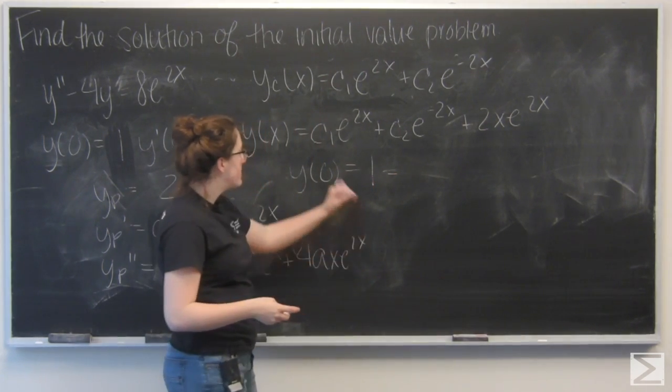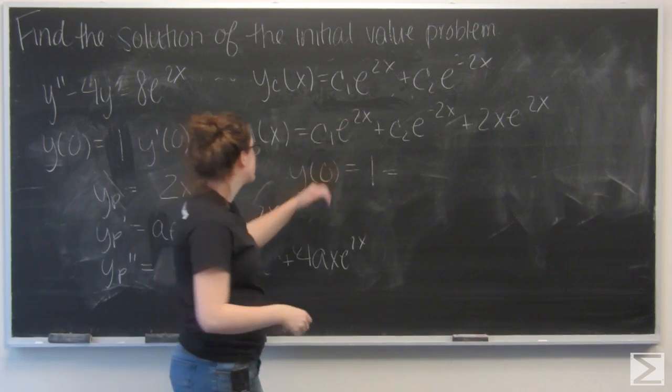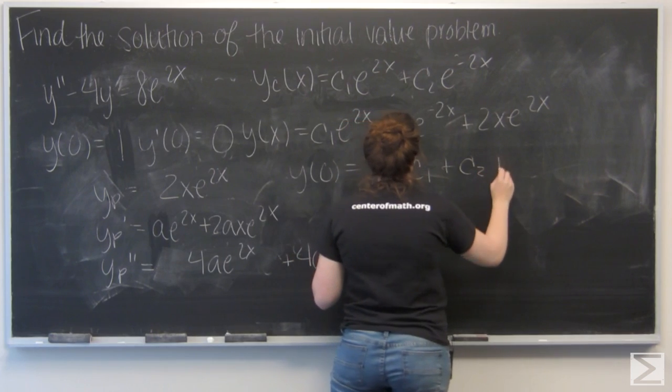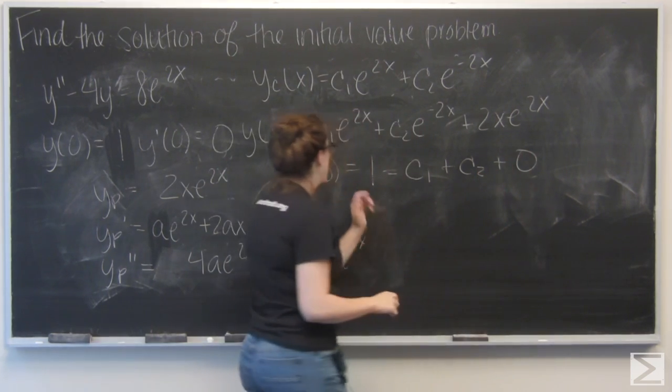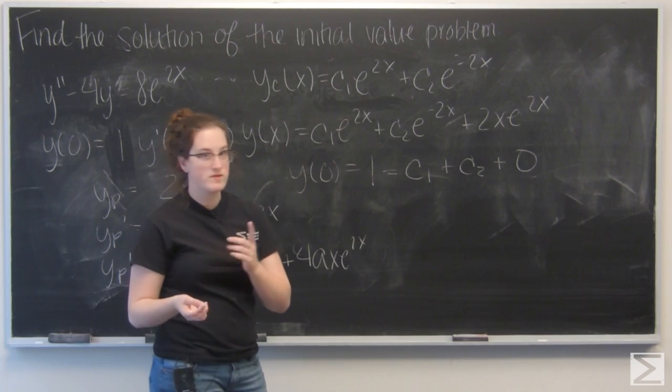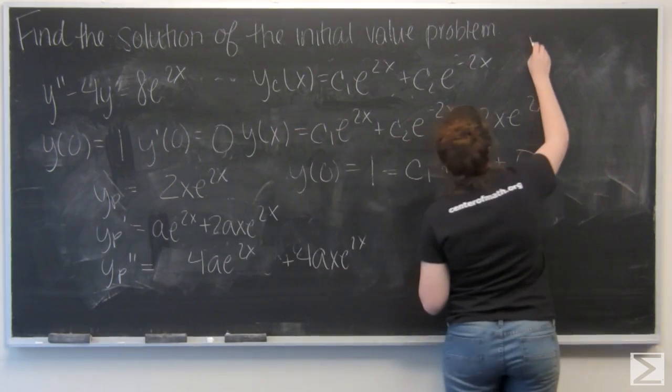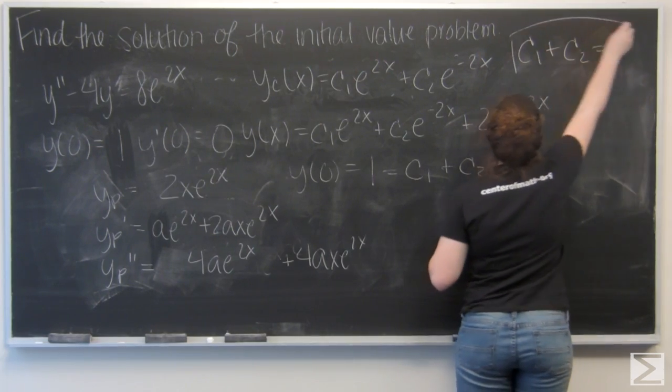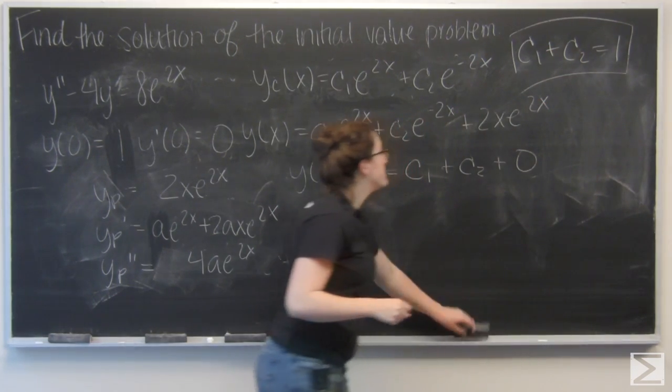I'm told that it equals 1. Let's plug in a 0 everywhere I see an x. This tells me that c1 plus c2 equals 1. I'm going to keep that in mind.